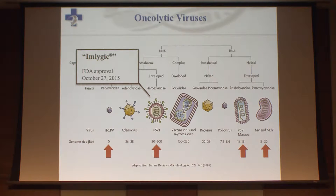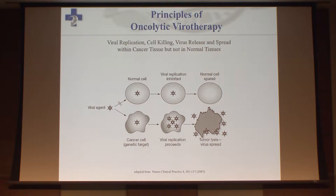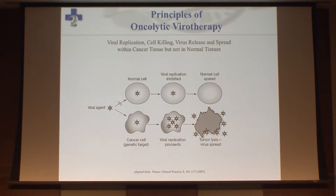Obviously, there are many other different platforms. My lab is focused on the measles virus platform, but today I will give a brief spotlight on all the different platforms, including VSV, vaccinia, and parvovirus as well. Compared to the sophisticated mechanisms of action of other immunotherapeutics, the viral approach is quite simple: a viral agent does not infect normal cells, and if so, viral replication is inhibited and the virus is cleared from healthy tissue. In malignant transformed cancer cells, however, viral replication proceeds, resulting in tumor lysis and viral spread.